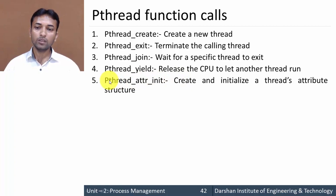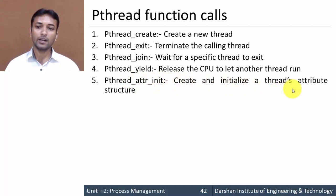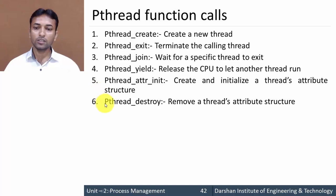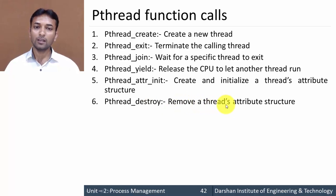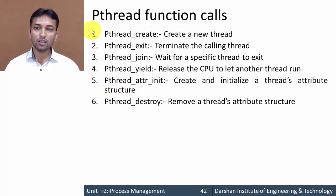The fifth system call is pthread_attr_init, which stands for attribute initialization. This system call is used to create and initialize a thread's attribute structure. The sixth system call is pthread_destroy, which is used to remove the thread attribute structure created by pthread_attr_init. These are the various pthread function calls, or pthread system calls. Thank you very much.